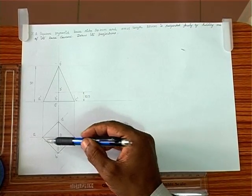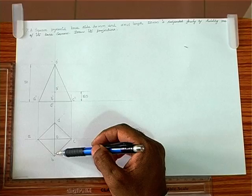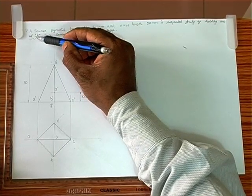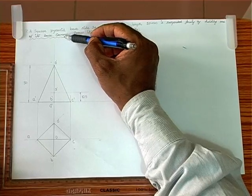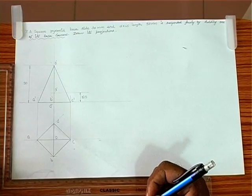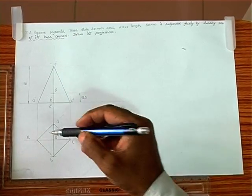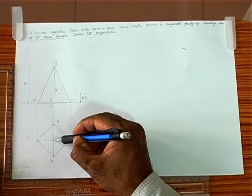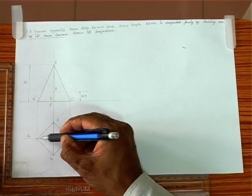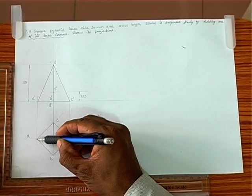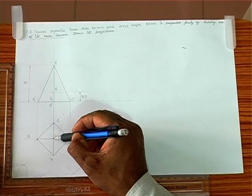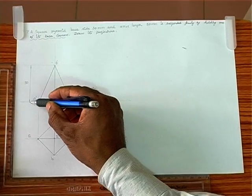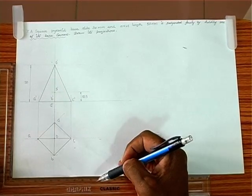Here we have the square pyramid in corner position. It is given that the square pyramid is held by one of the base corners. Corner position simply means the position of the square such that the line joining the center of the plane and the corner should be strictly parallel to the x-y line.